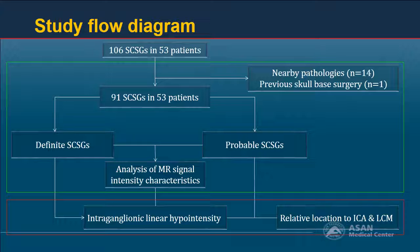Among 106 neck sites in 53 patients, we localized 91 neck sites after excluding 15. For all localized neck sites, we analyzed MR signal intensity. During consensus reading, intraganglionic linear hypointensity was frequently observed, further defined as an intraganglionic hypointense line located along the longitudinal axis of the ganglia, continuous on at least two or more contiguous axial images. The presence of this finding was evaluated in both groups, and the relative location of the probable SCSG was also evaluated.